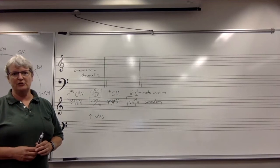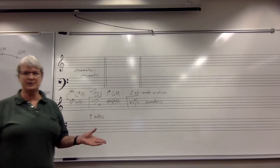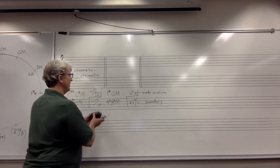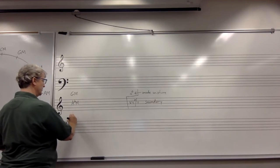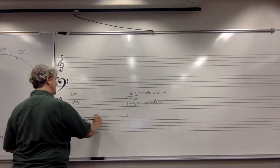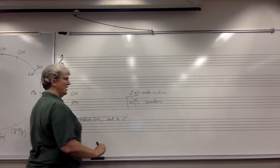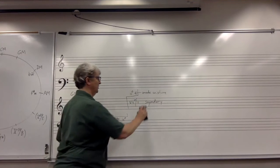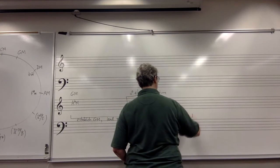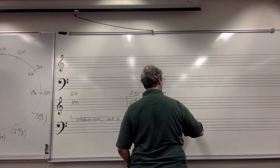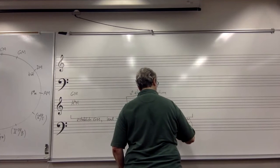Now, if you're writing your own modulation, remember there's more to it than simply finding the right pivot chord. If we wanted to modulate from G major to A flat major using this particular pivot chord, we would have to start with chords that establish the key of G major and then chords that lead to the ii° chord. Then after the pivot chord, we would need to move to the dominant of A flat major and cadence, probably with a perfect authentic cadence, remembering all those flats we would have to add.